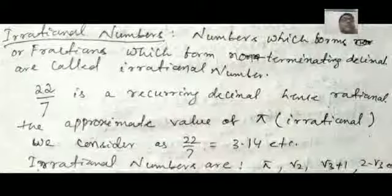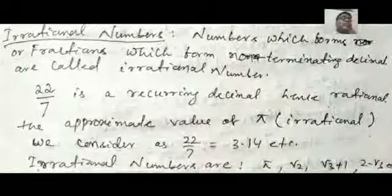Some more irrational numbers are root 2, root 3 plus 1, 2 minus root 3, some other numbers also you can, root 3 by 2, 2 by root 3, any number you can take like that with the irrational numbers.